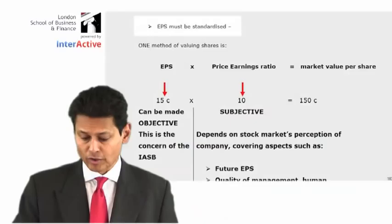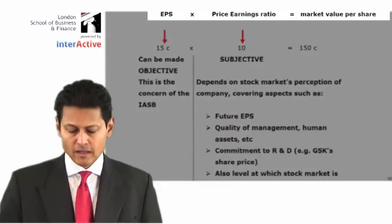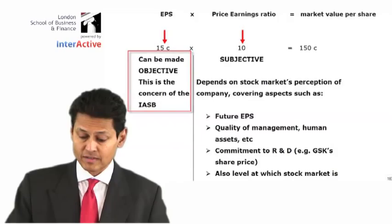Why EPS is so important and why the standard is required: if you move on to the next page, you will see the fourth point. One method of valuing shares is earnings per share multiplied by the price earnings ratio, which equals market value per share. As I say, earnings per share can be made objective.